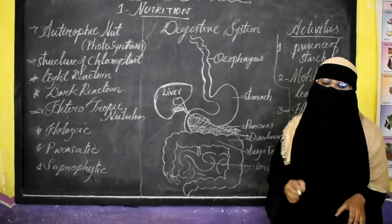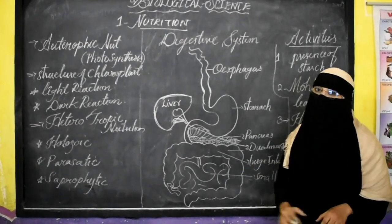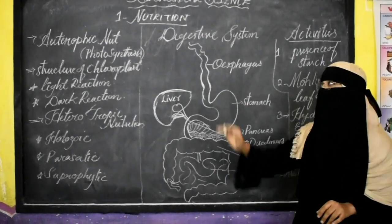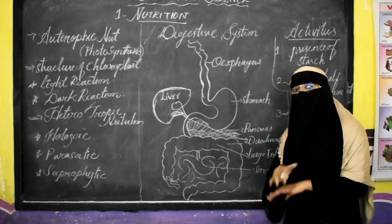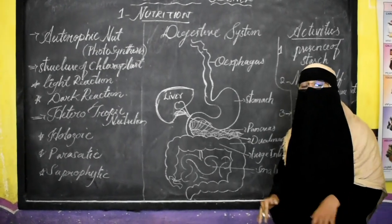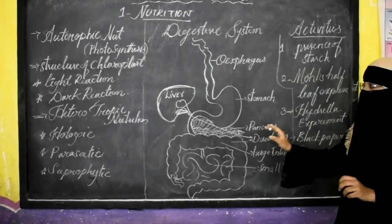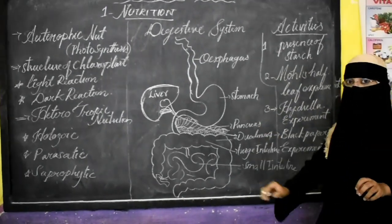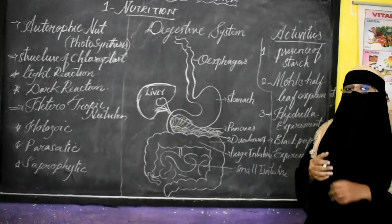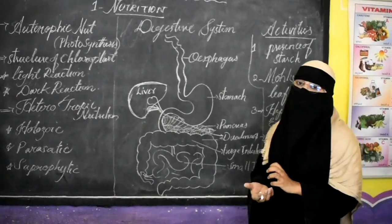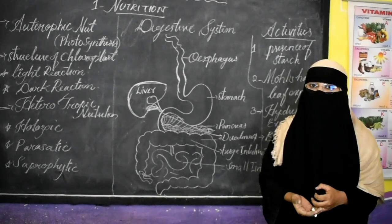You can definitely get A1 grades if you continue your hard work constantly up to the examination level. Now let's enter into the first chapter — nutrition. I'm not going to take you into the depth of the chapter, just going to say a few basic important terms and highlights so you can quickly get a review and revise it for the examination.